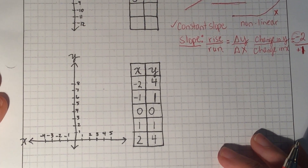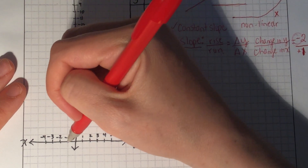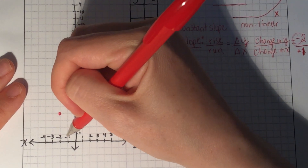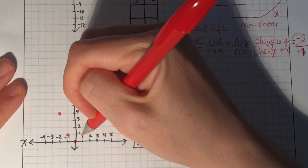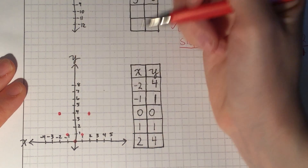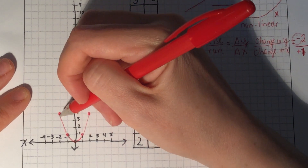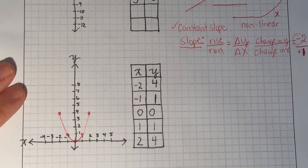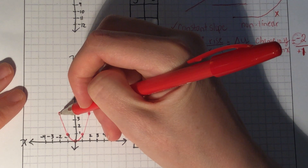Now let's look at this other graph. I'm going to quickly plot those points: negative two comma four, negative one and one, zero comma zero, one and one, and two and four. We can already see this one definitely does not form a straight line — I cannot draw that with a ruler. That shape is called a parabola in math, so we know this is not a linear relation.